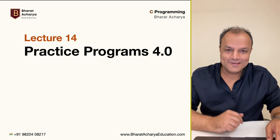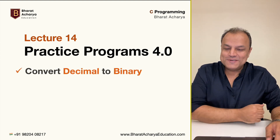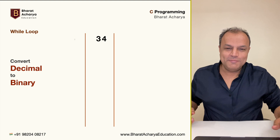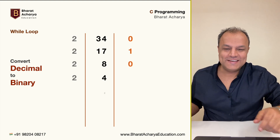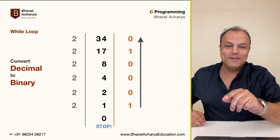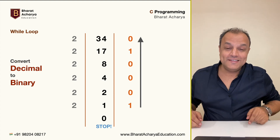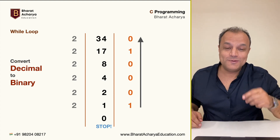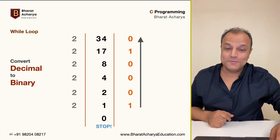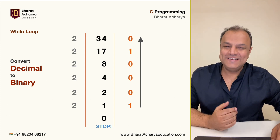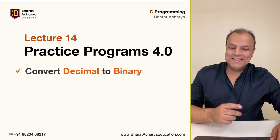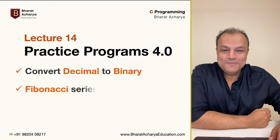The first one: convert a number from decimal to binary. Remember the childhood logic? You take a number, divide by 2, get a quotient and a remainder, keep doing this till the time your quotient becomes zero, take all the remainders from bottom to top — that's your conversion. So you write a program for this. It's very, very frequently asked.